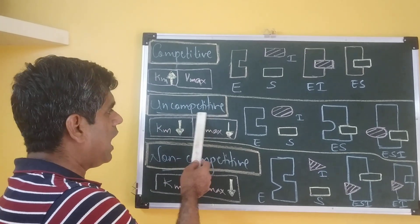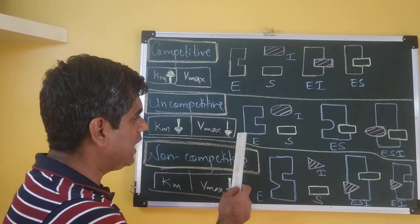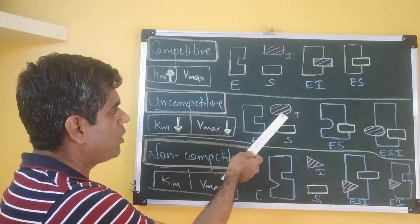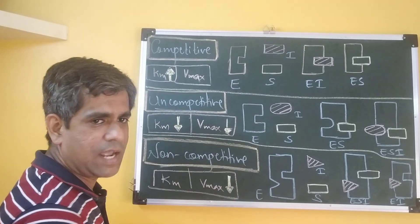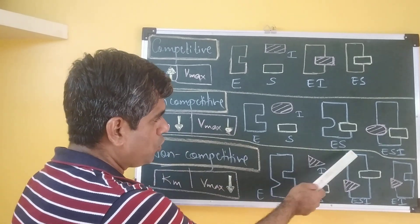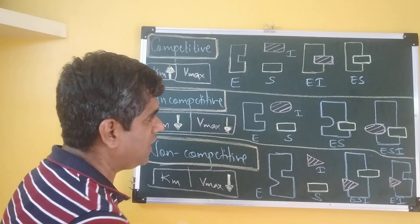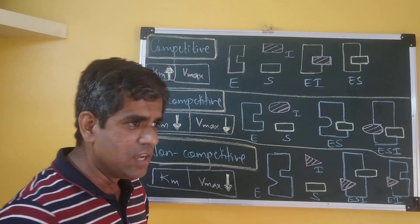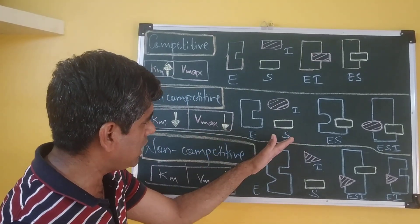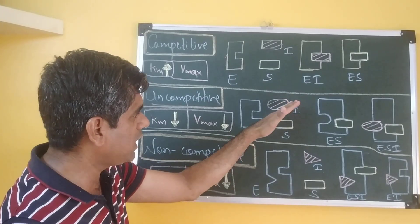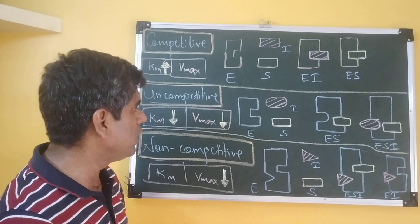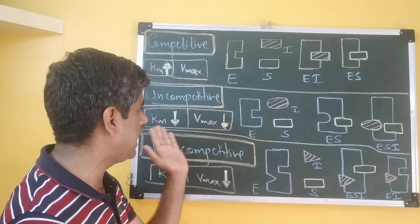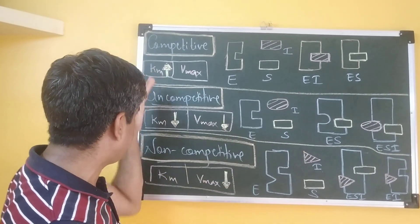In contrast, a typical uncompetitive inhibitor binds only to the ES complex. It cannot bind the free enzyme because there is no proper binding site for it on the free enzyme surface. Only after E and S have bound together is the binding site for the inhibitor revealed, and therefore the inhibitor binds the ES complex to form the ESI complex. The enzyme quickly binds the substrate so that the inhibitor gets its binding site, and therefore the affinity of the enzyme towards the substrate increases. Due to the inverse relationship between Km and affinity, affinity increases and Km decreases.